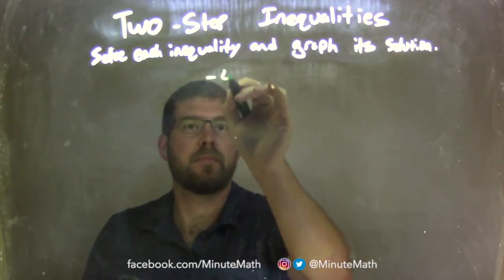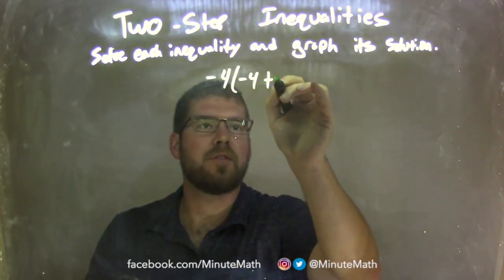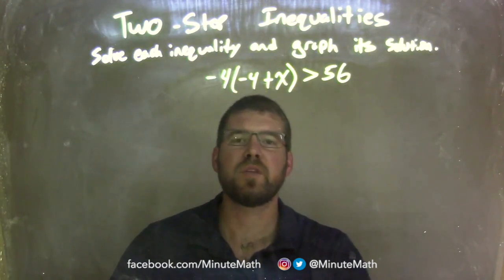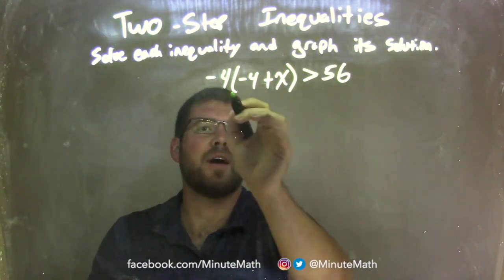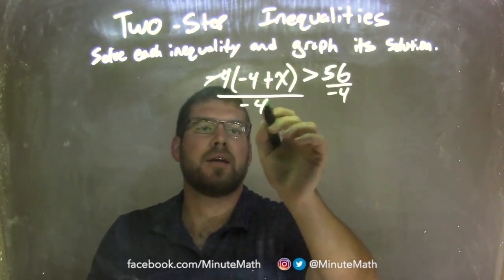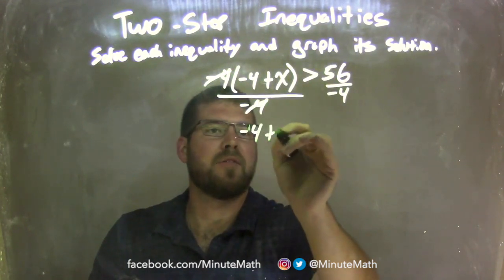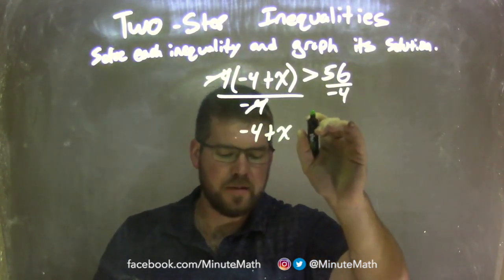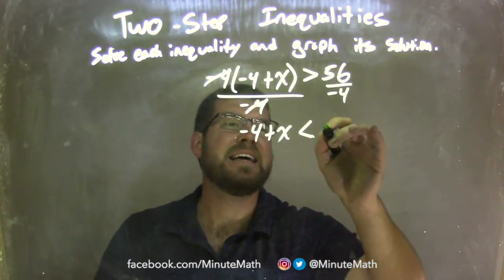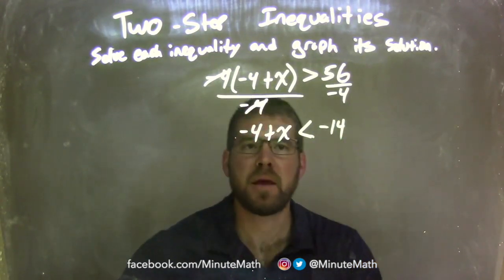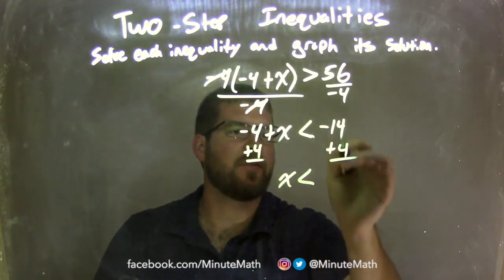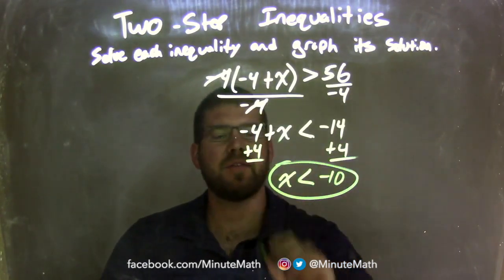Negative 4 times (negative 4 plus x) is greater than 56. My first step: divide both sides by negative 4. That eliminates the negative 4 out here, and I'm left with negative 4 plus x inside the parentheses. My inequality needs to flip from greater than to less than. And 56 divided by negative 4 is negative 14. Now I need to add 4 to both sides, leaving me with x is less than negative 14 plus 4, which is negative 10. Now x is isolated.